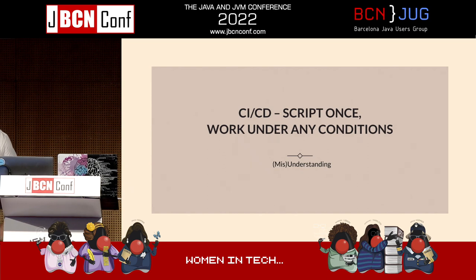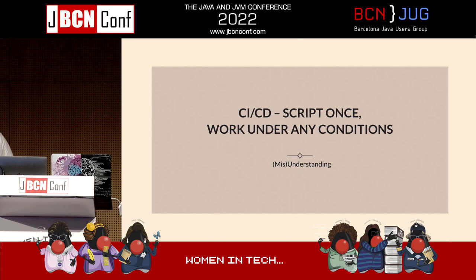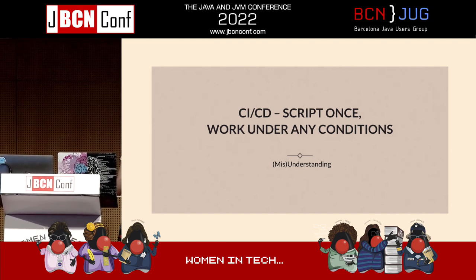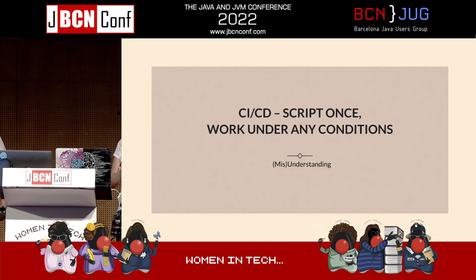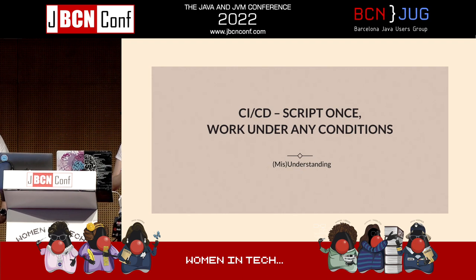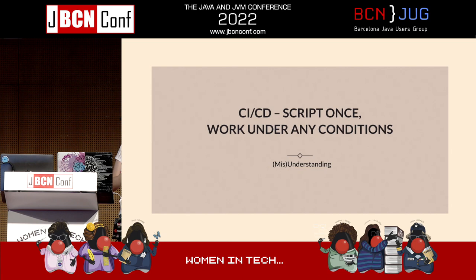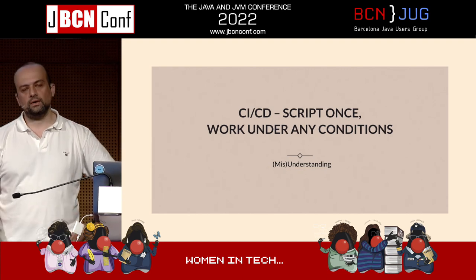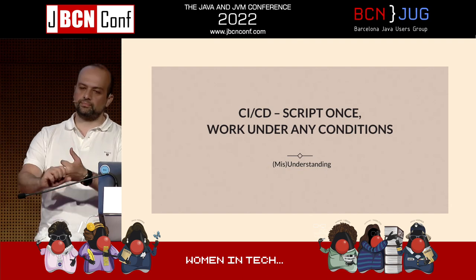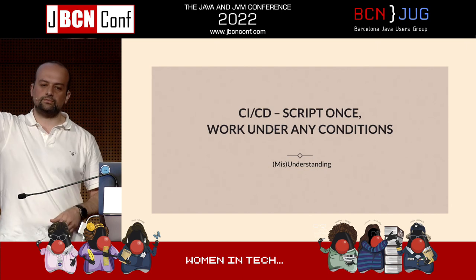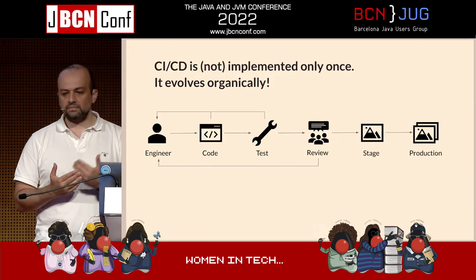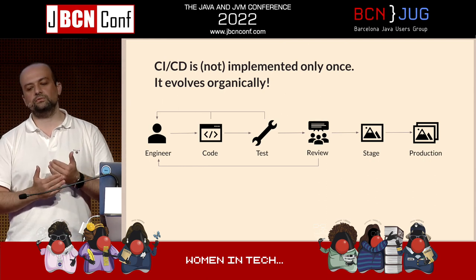Now let's talk about continuous integration and continuous delivery — and this thing about scripting once and it works forever, a pipeline that works forever and never changes. Well, it's not like that. A lot of people, out of experience, will have project managers or customers say, 'Why do you need to rewrite our CI/CD pipeline? We spent previous sprints doing that — now it should be working, right?' And then you explain: there was a new version of that, a new thing here, a new service using something else, pulling from somewhere else — and you need to update all that. It has to evolve and it has to evolve organically.